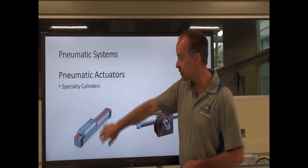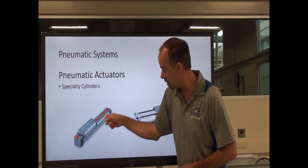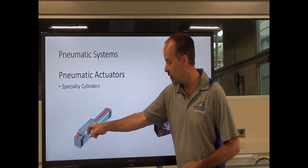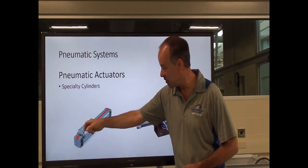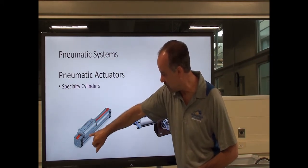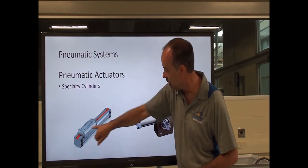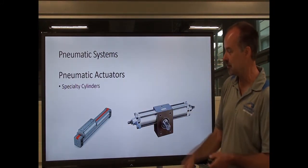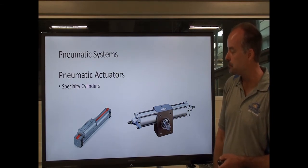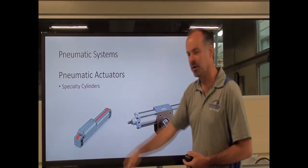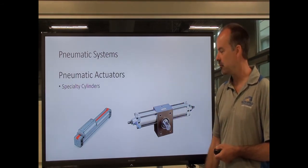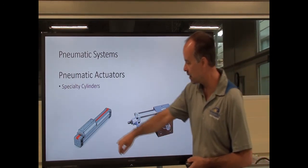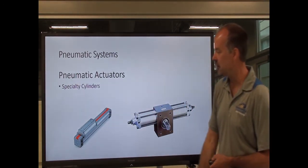Here we have a rodless cylinder. Basically, there's a piston inside this cylinder. That piston is a really strong magnet, and it actually holds this slide in position on the outside of the cylinder. As the piston moves inside, this slide moves back and forth with the piston based on the strong magnetic pull. You might find these on a piece of equipment to open and close a door automatically — any instance where you want this type of linear movement but without an exposed rod.